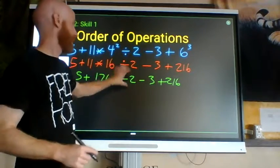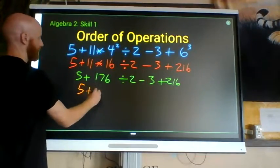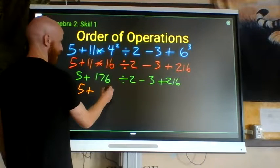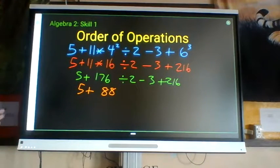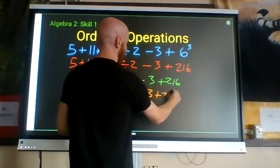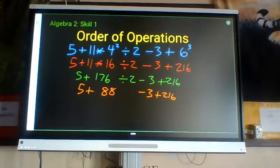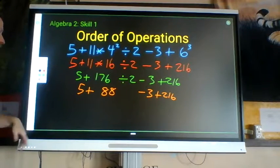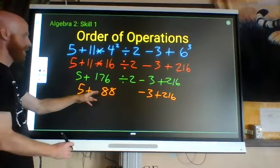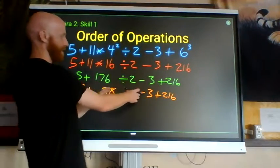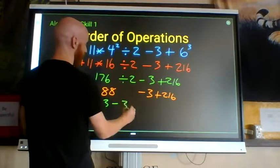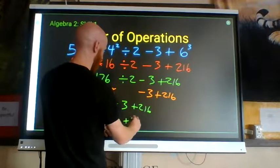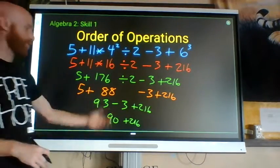Next, division: 176 divided by 2 is 88. So we have 5 plus 88 minus 3 plus 216. When you get down to only addition and subtraction, work from left to right: 5 plus 88 is 93; 93 minus 3 is 90; 90 plus 216 gives a final answer of 306.